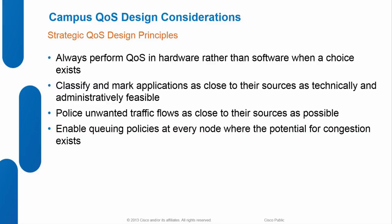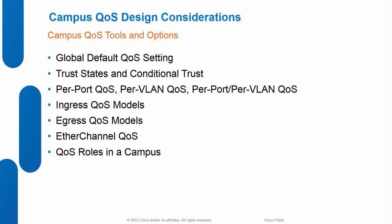QoS tools include global trust states, conditional trust for Cisco IP phones and telepresence, per-port QoS versus per-VLAN, and per-port per-VLAN on the Catalyst 4K and 3K. In this campus section we're talking about MLS-based switches — the 3750, classic 4K, and 6500. The next-generation switches — the 3850, 4K with SUP 6/7/8, and 6K SUP 2T — are all MQC-based, more like a router, and don't use the MLS command set.